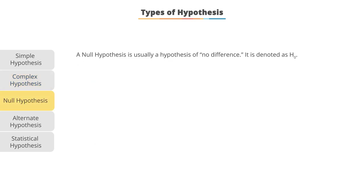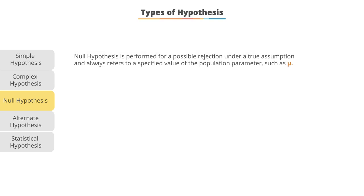Now the null hypothesis is the baseline. It's the hypothesis of no difference and it's denoted as H sub zero. It's a subscript. The null hypothesis performed for a possible rejection under the true assumption and always refers to a specified value of the population parameter μ.